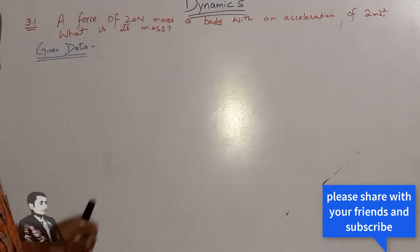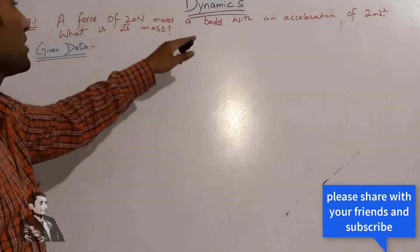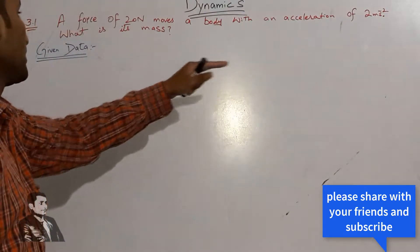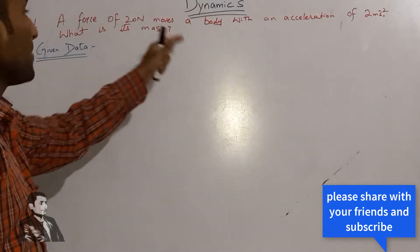What it says: a force of 20 Newtons moves a body with an acceleration of 2 meters per second squared. What is its mass?